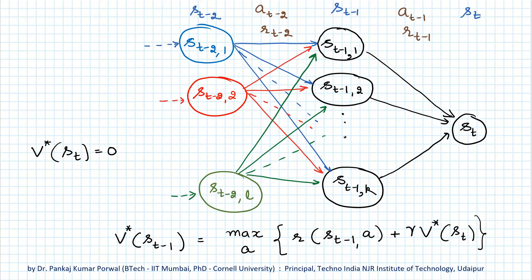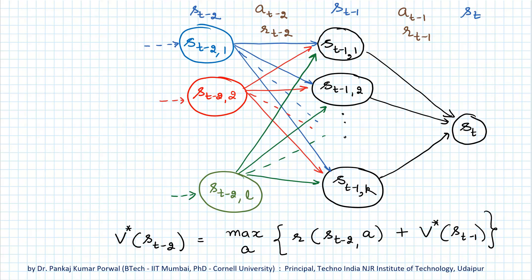So the problem where we had to optimize with respect to all the actions, we are now finding optimal state values just by maximizing with respect to one action at a time. This is the main advantage of using the Bellman principle of optimality. We then move one step back and obtain the optimal state value for state s_{t-2}, and so on. This way, using the Bellman principle of optimality, we find optimal state values at all steps by moving in the backward direction using a recursive relation — that's why this is called solving the optimality problem using backward induction.